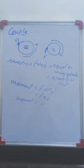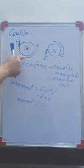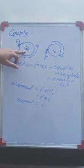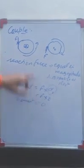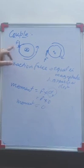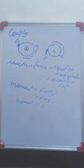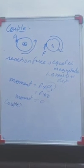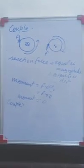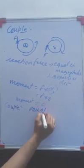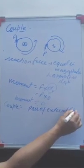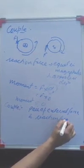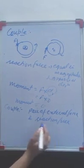Whenever a force is applied on a pivoted body, two forces are acting: one is the force you are applying and the second is the reaction force at the pivot. But since the moment of the reaction force becomes zero, we consider only the applied force. However, there are always two forces present, and we can say that the couple is the pair of external force and the reaction force.